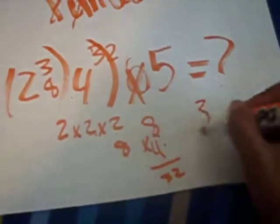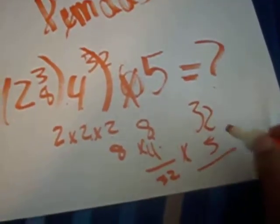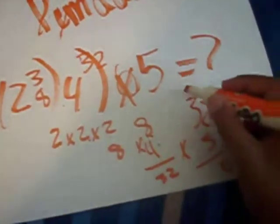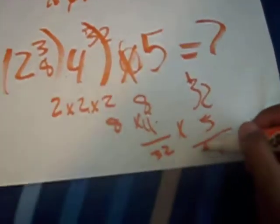What's 32 times 5? 5 times 2 equals 10. 5 times 3 equals 15, plus 1 equals 16.